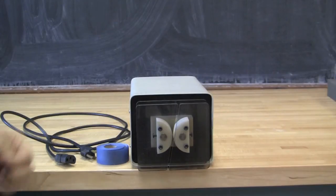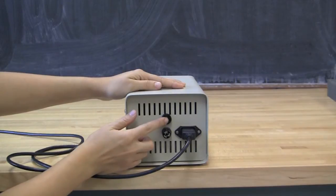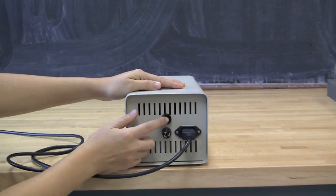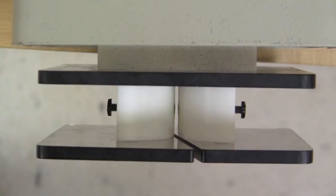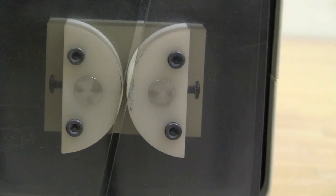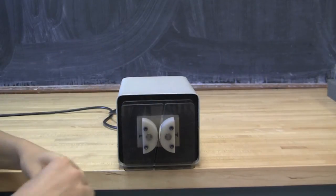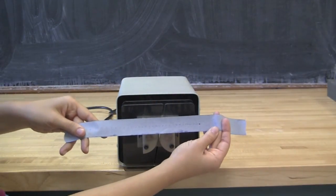To set up the spark timer, first connect it to the power source using the cable. The spark timer can now be operated using the push button on its rear end. It has two convex surfaces and it sparks every 1/60th of a second. The spark tape then records the sparks as it passes through the convex surfaces.